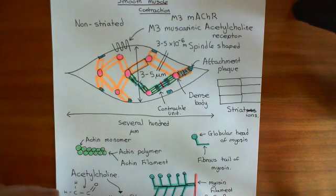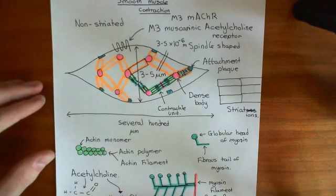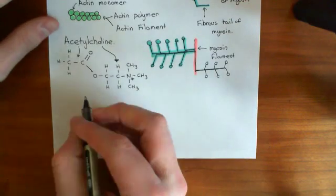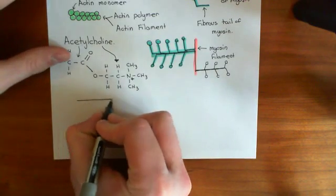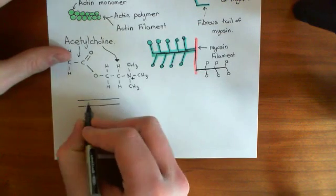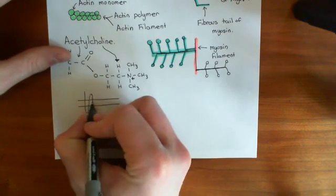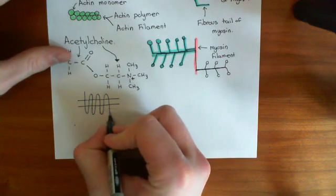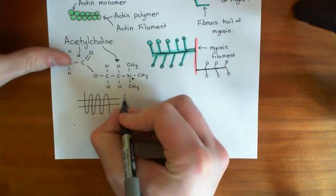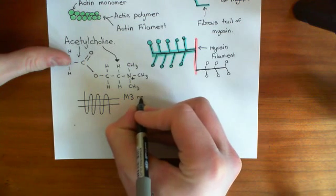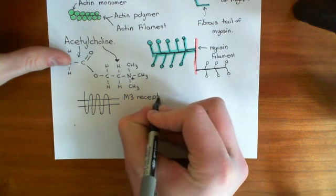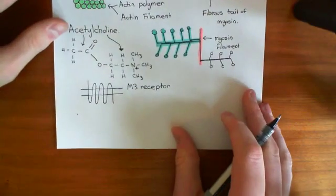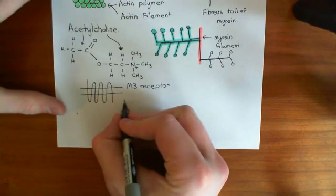Let's look at the pathways that the M3 muscarinic acetylcholine receptor is involved in. It's a G-protein-coupled receptor, so let's draw it out bigger down here. Here's the phospholipid bilayer, and here are the seven membrane-spanning alpha helices — one, two, three, four, five, six, and seven. This is the M3 muscarinic acetylcholine receptor.